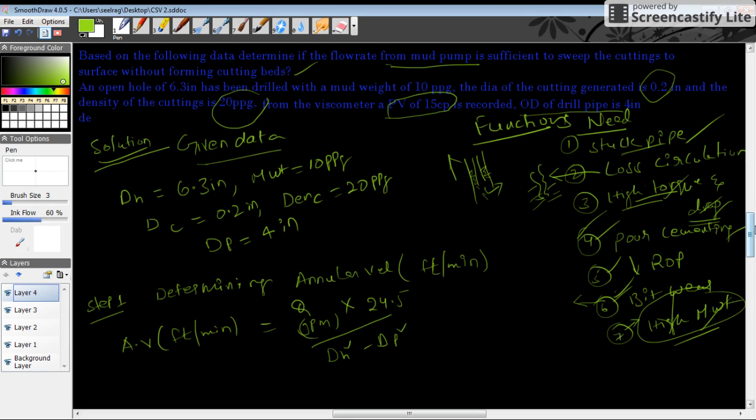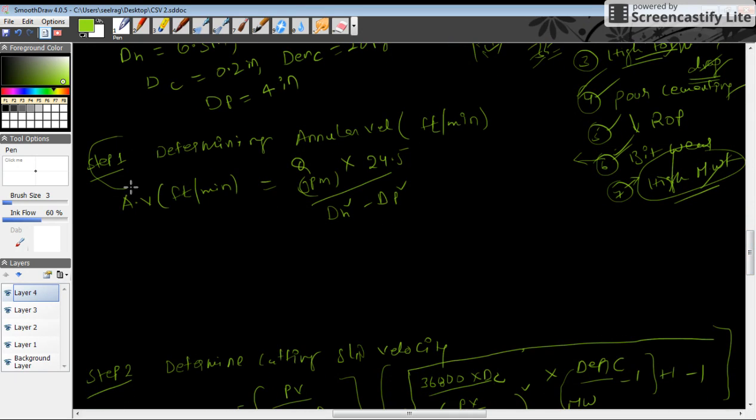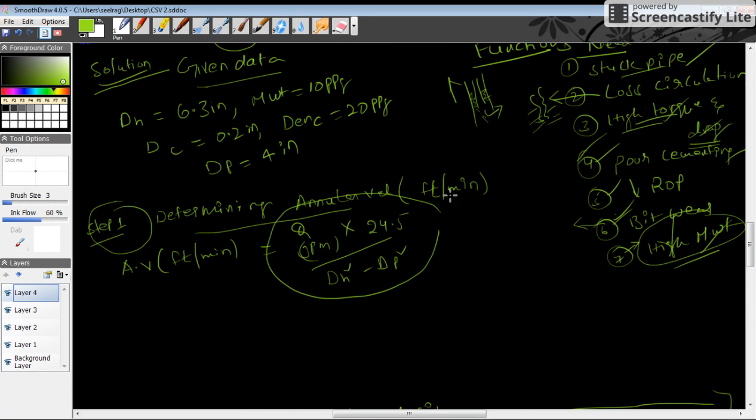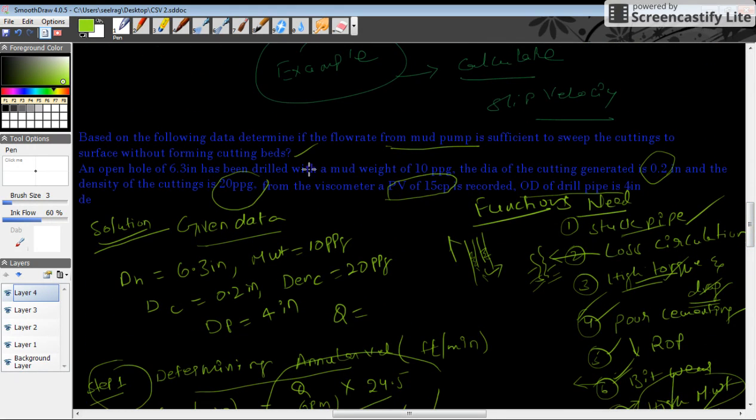The first step in determining the slip velocity is determining the annular velocity in feet per minute. Annular velocity can be calculated using this formula where Q is in gallons per minute. Q is missing in this formula, but we can add it - mud pump flow rate Q is 300 gallons per minute.